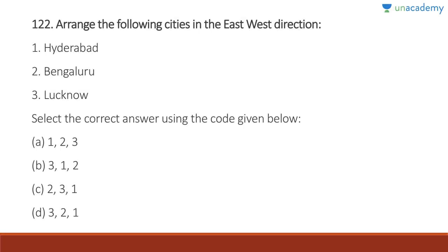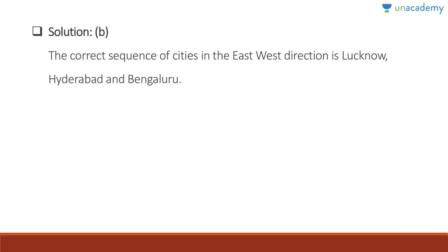Question 122: Arrange the following cities in the east-west direction. Among Lucknow, Hyderabad, and Bangalore, the easternmost city is Lucknow, then Hyderabad, and the westernmost is Bangalore. Answer is B, 3-1-2. You need a basic understanding of India's map to answer these questions.